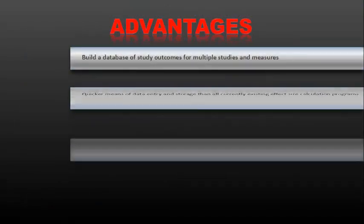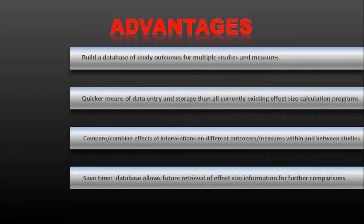Now, we're just going to list some advantages of using our software. Number one, it's going to allow you to build a database of study outcomes for multiple studies and measures, which will allow you to go back and double-check your data. It's a quicker means of data entry and storage than all currently existing effect size calculator programs that we could find. It's going to compare and combine the effects of interventions on different outcomes and measures within and between studies. And it's going to save you time. The database allows future retrieval effect size information for future comparisons. Say, you're running a future meta-analysis using some studies and outcomes you've already calculated previously effect sizes for. You can use those going forward in your future meta-analyses.